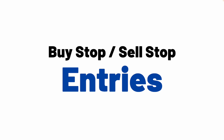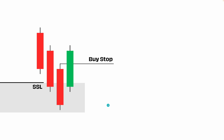Let's head over and show you where you would place a buy stop and a sell stop. In our first example, we might have come down into a higher time frame point of interest, taken out some sell side liquidity, and now be looking for a reversal. I will set my buy stop on the previous candle, assuming that the bullish candle has not yet formed.